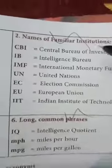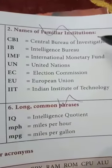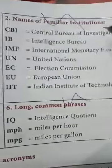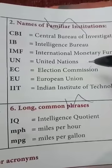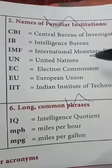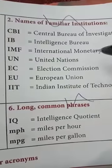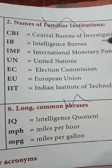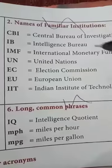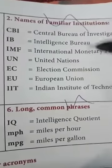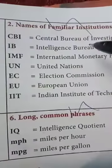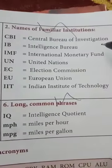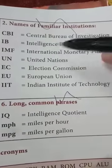Names of familiar institutions: These can relate to economic fields, climate fields, crime branches, and education. IIT stands for Indian Institute of Technology. CBI stands for Central Bureau of Investigation.